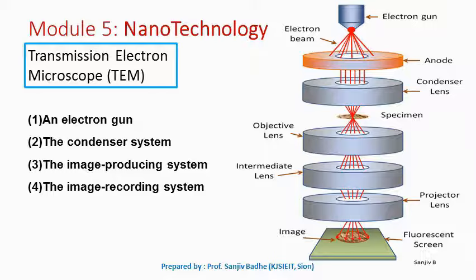The main parts of a transmission electron microscope are: an electron gun, the condenser system, the image producing system, and the image recording system.